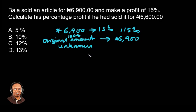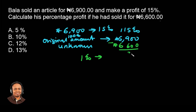The logic is that we need to find 1%. How much is 1%? Because if we can get 1%, we can figure out — we're later told that suppose he sold this same article for 6600 Naira. The difference in price is 300 Naira. So if we can find how much is 1%, we can figure out how many percentage that is, then subtract to get the actual percentage profit if he had sold for 6600 Naira.